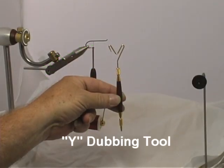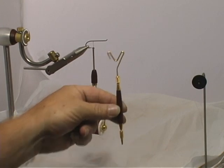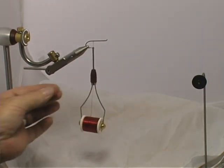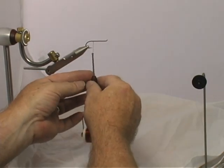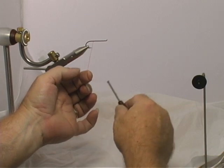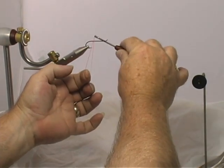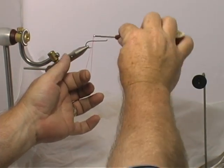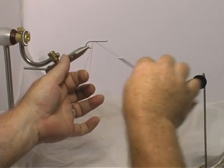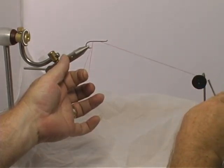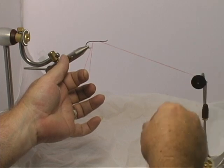The Wasatch Y Dubbing Tool. Just like any other dubbing operation, you start by creating a dubbing loop, tying it off, and getting your bobbin out of the way.